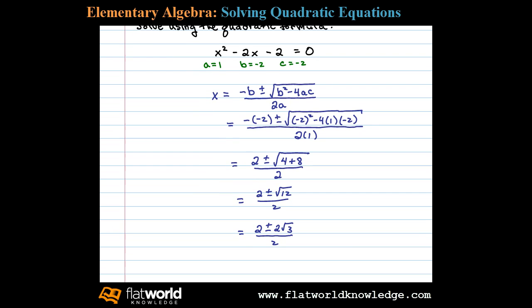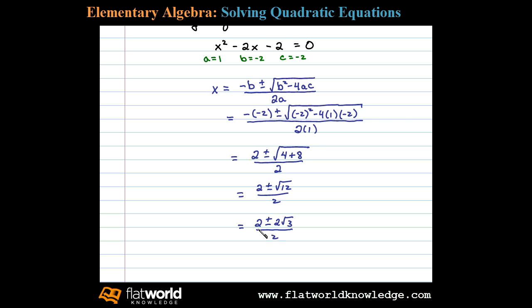Now at this point, notice 2 divides into both of these terms. We can simplify further if we break this fraction up: 2 over 2 plus or minus 2 square root of 3 over 2, which equals 1 plus or minus square root of 3. So these are the two solutions to the original quadratic equation.